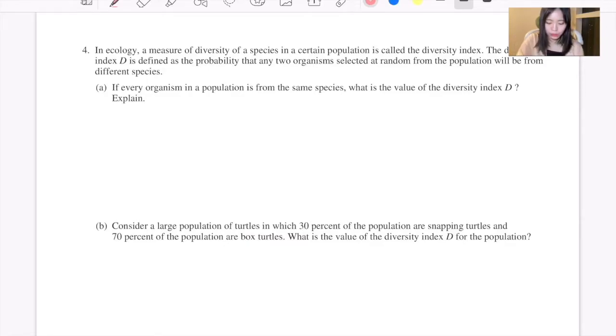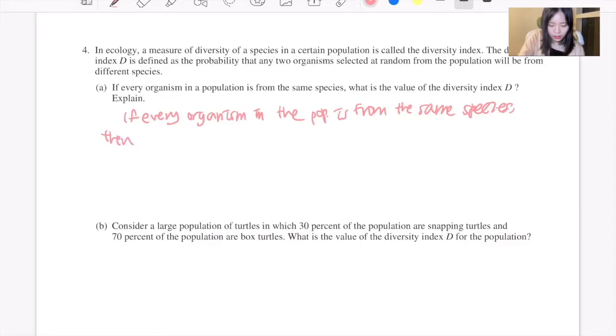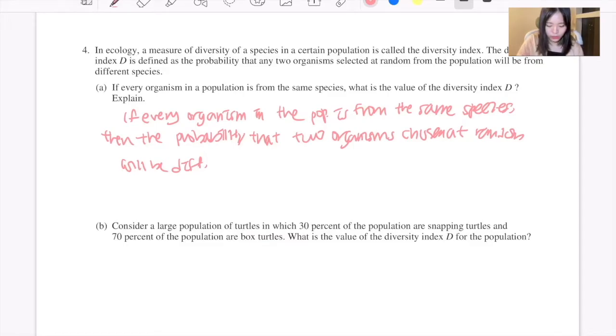Well, if every organism in the population is from the same species, then the probability that two organisms chosen at random will be from different species is zero. And therefore, the value of diversity index D will be zero.